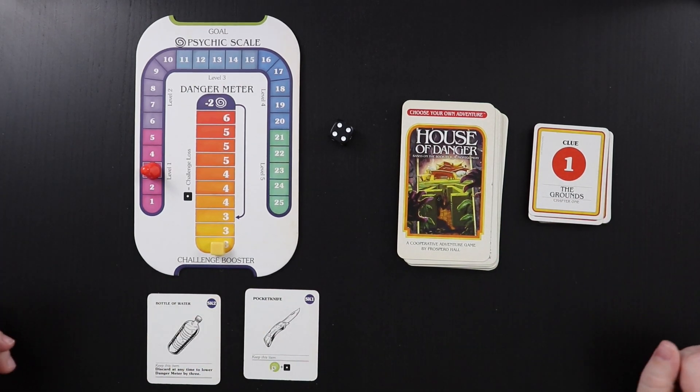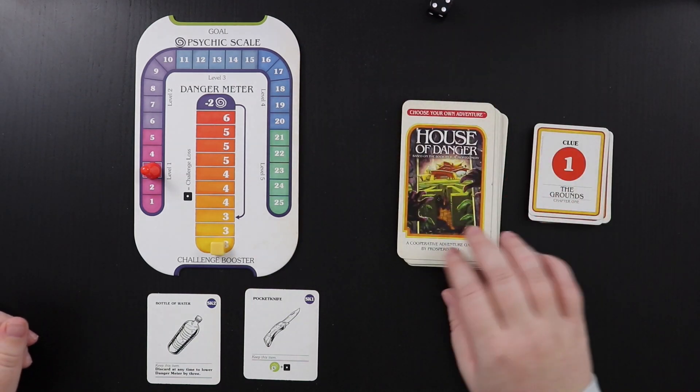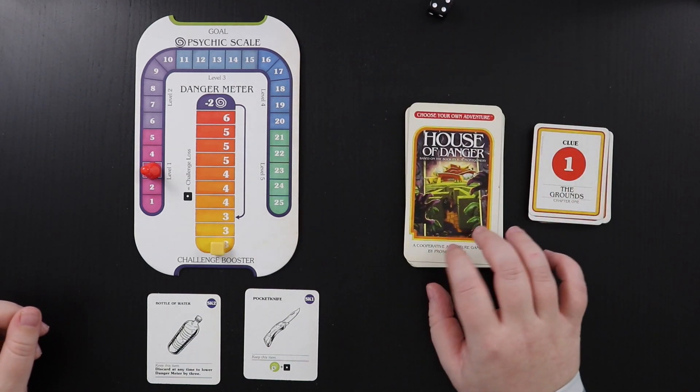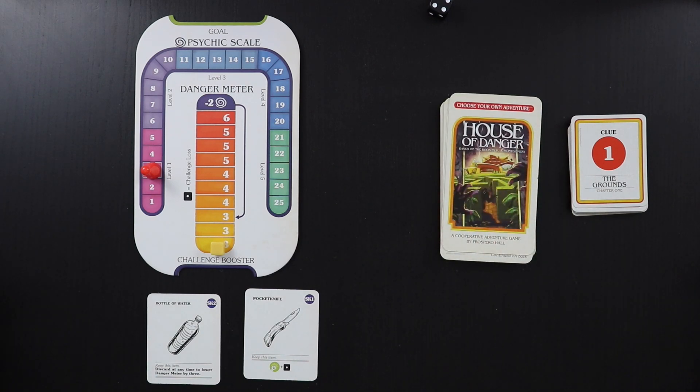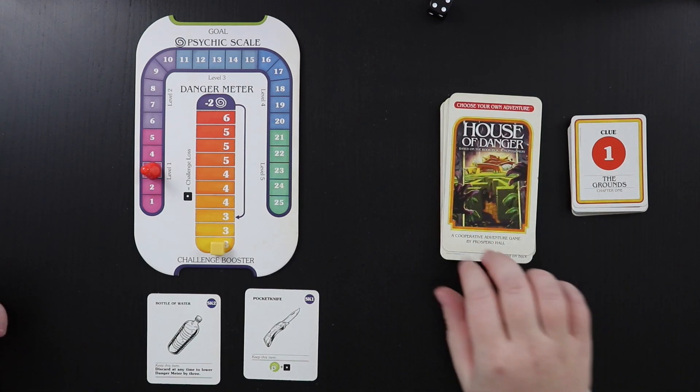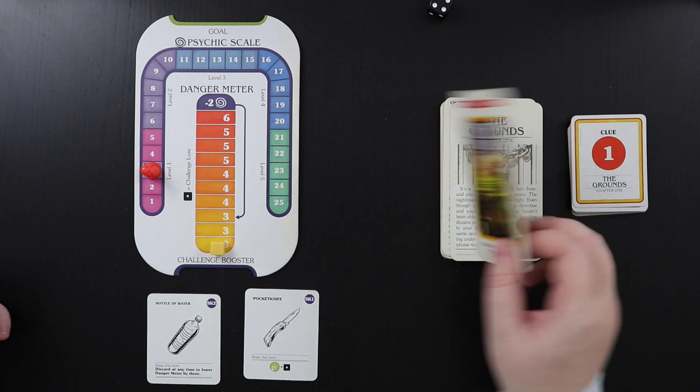And then beyond that, it's actually really simple to start. You just flip over the first card. I'm actually going to flip over the first card and read it. So if you're super spoiler purist, maybe you want to stop now, but I'm just going to show you how to get started and then we'll stop. So I like this little cover card.